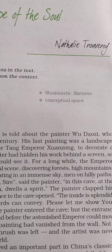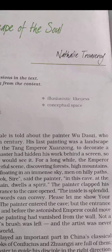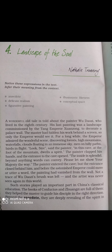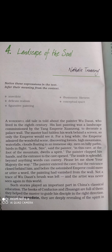This idea has been illustrated through stories in this chapter. Key expressions to learn: 'anecdote' means short events or stories; 'delicate realism' means close similarity to a real object; 'figurative paintings' means flowery or symbolic drawings; 'illusionistic likeness' means creating an illusion — something not related to reality, which we can call a 'brahm' or illusion; and 'conceptual space' means the space for imagination.